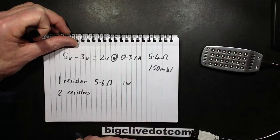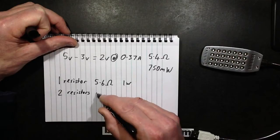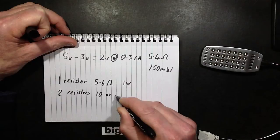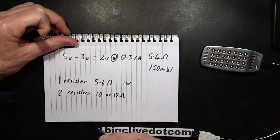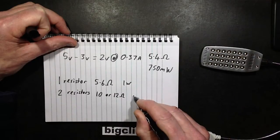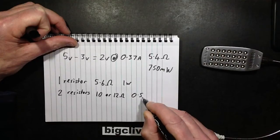If it's two resistors, they'll be double that value because they're dropping half the current each. So that would either be 10 or 12 ohm, and again about half watt each.